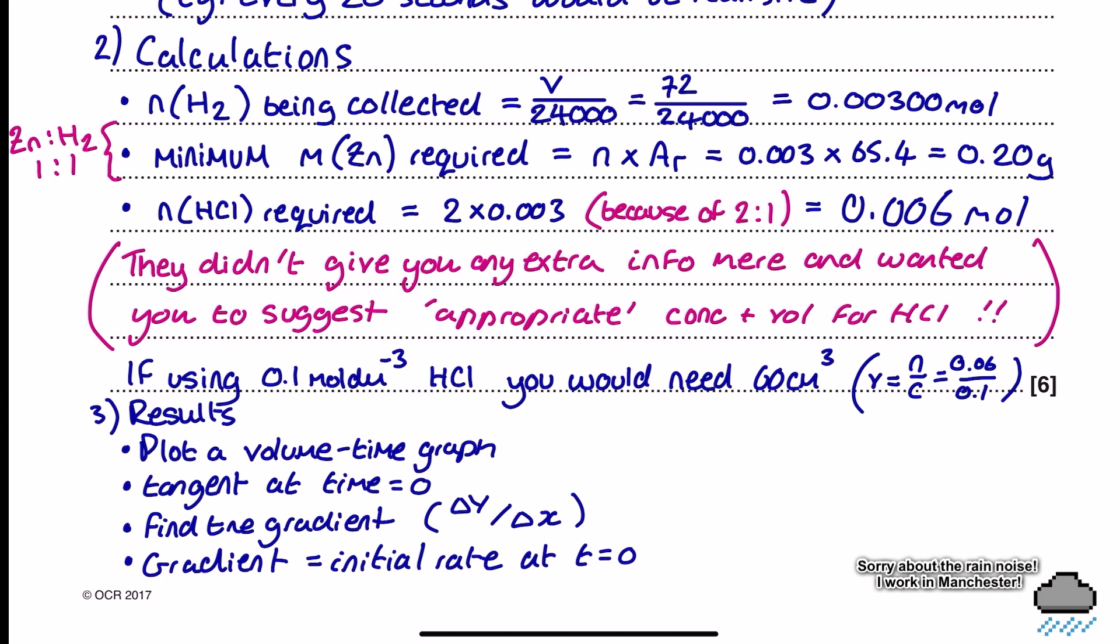Next up then, I'm going to look at my moles of HCl required, because that's going to allow me to estimate a concentration and therefore volume of HCl that could be used in this procedure. Now, because of the 2 to 1 ratio in the reaction equation, I know that my number of moles of HCl that I'm going to need to get the estimated 72 centimeters cubed of hydrogen gas is going to need to be 0.006 mole, so 6 times 10 to the power of negative 3. And since they don't give you any other information here other than the volume of the measuring cylinder used to measure out the HCl is 100 centimeters cubed, I've then got to go in with a sensible suggestion.